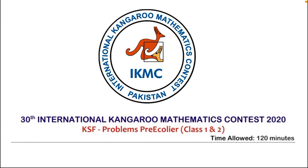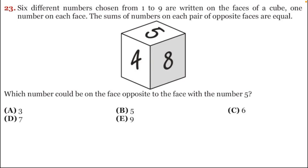This is IKMC — International Kangaroo Mathematics Contest — and we are solving problems for pre-ecolier class one and two, past paper 2020, question number 23. Six different numbers chosen from one to nine are written on the faces of a cube, one number on each face. The sum of numbers on each pair of opposite faces are equal. We need to find which number could be on the face opposite to the face with the number five. Options: A is three, B is five, C is six, D is seven, E is nine.